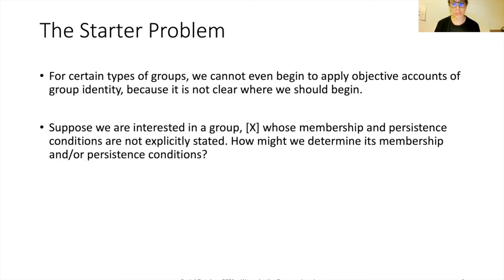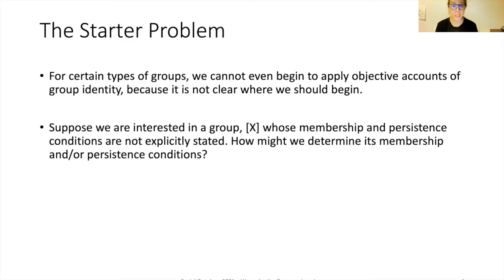A problem that arises in these accounts is that for certain types of groups we cannot begin to apply such accounts because it's not clear where we should start. Suppose we're interested in a group called Group X, whose membership and persistence conditions are not explicitly stated — unlike an organized group like a union, government, or corporation. How might we determine the membership and persistence conditions of that group?